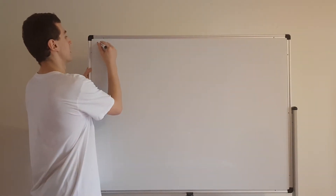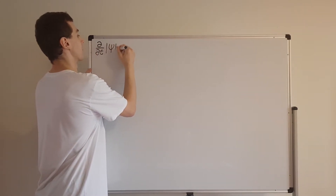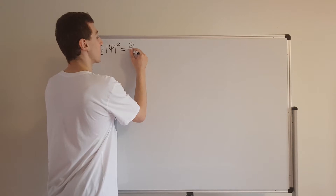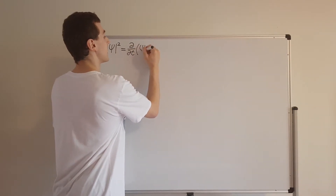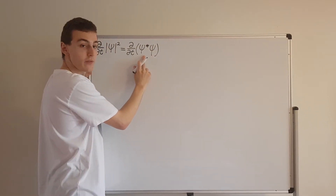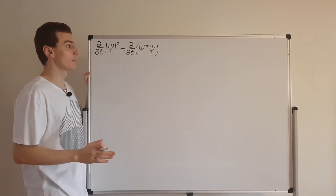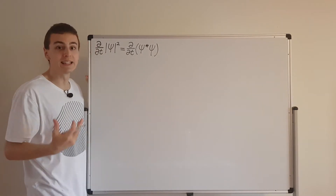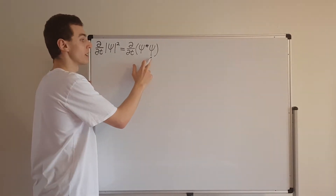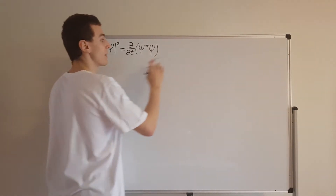Let's start off with the partial time derivative of the square amplitude of the wave function. This is actually just the partial time derivative of psi star times psi — the complex conjugate of the wave function times the wave function. That gives us the square amplitude of the wave function, which is how we turn the wave function into a probability density function. We're trying to find the partial time derivative, and since we have a product we can use the product rule for differentiation.